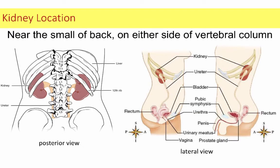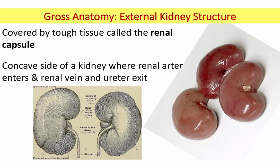The kidneys are just above the small of your back, barely inside the rib cage on either side of the vertebral column — from about the 11th thoracic to the 3rd lumbar vertebra — similar location in both males and females. On the outside, the kidney is covered by a very tough connective tissue membrane called the renal capsule. There's also a concave area on both kidneys called the hilum, and that's where the renal artery comes in, the renal vein goes out, and the ureter exits.